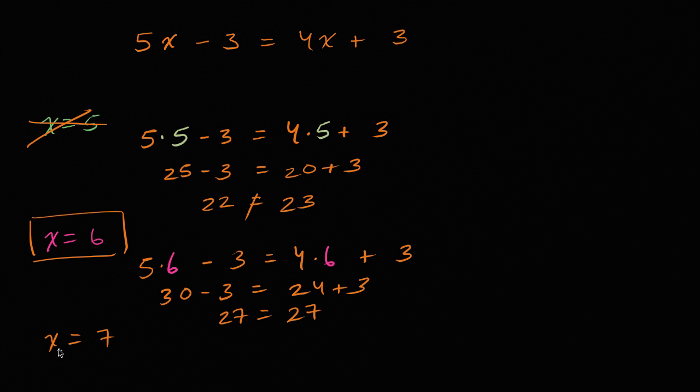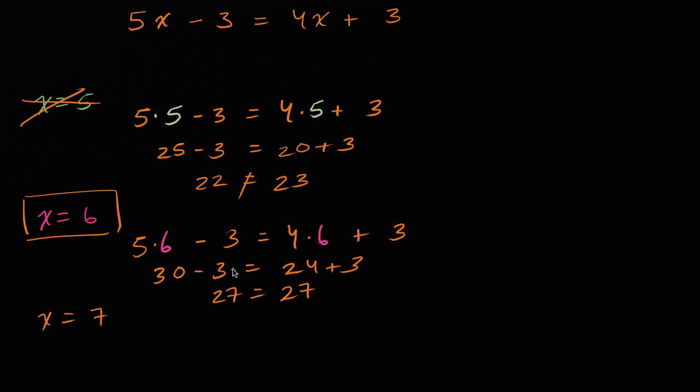Now just for good measure, let's just verify that x equals seven will not satisfy it. So if x is equal to seven, we're going to get five times seven minus three needs to be equal to four times seven plus three.